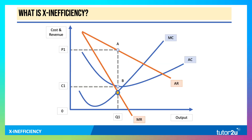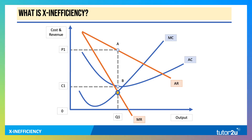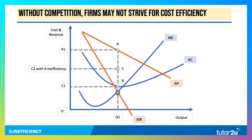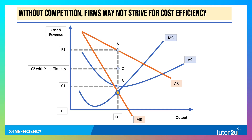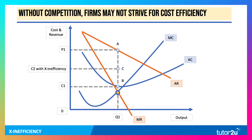Here's the standard monopoly diagram showing the profit-maximising price of P1 and the unit cost of C1 at output Q1. With X-inefficiency, the cost is higher. Without competition, firms may not necessarily strive to achieve the lowest unit cost associated with a given output. So C2 could be the unit cost with X-inefficiency at output Q1, rather than cost C1. As a result, profits will be lower.